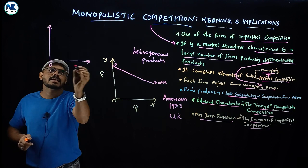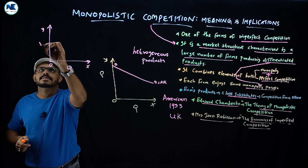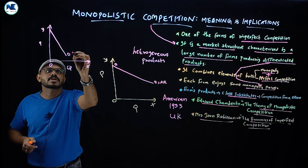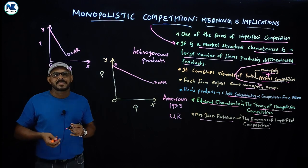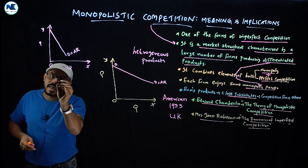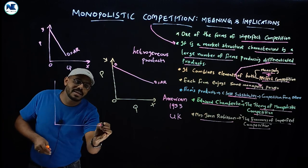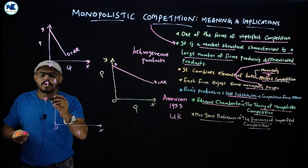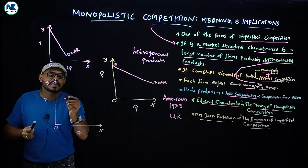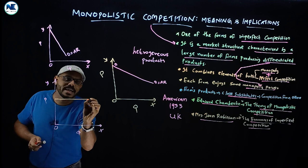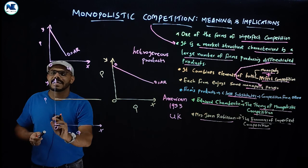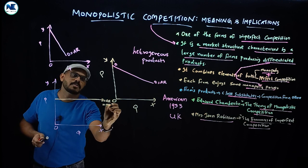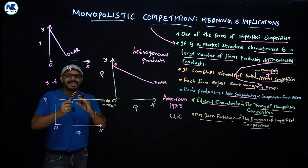In the monopoly market, the demand curve is also downward sloping but more steep, and it equals the average revenue curve. Under perfect competition, the demand curve is a straight line parallel to the x-axis, and demand equals average revenue equals marginal revenue equals price.